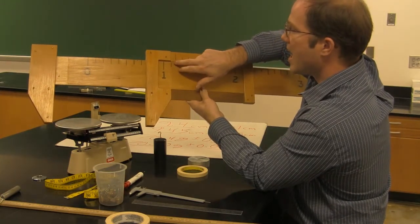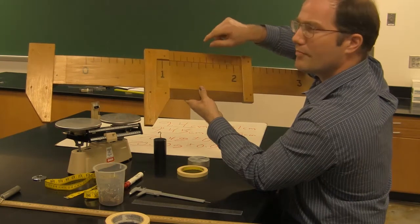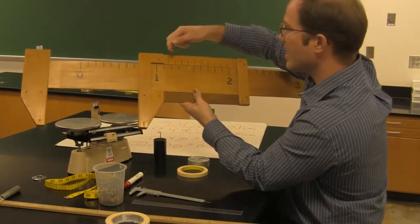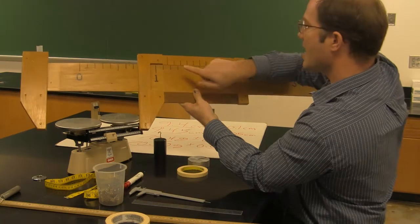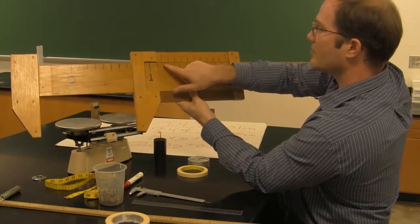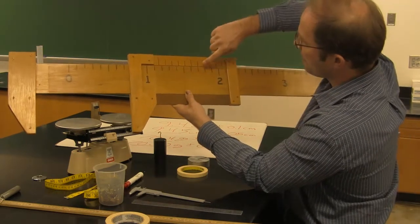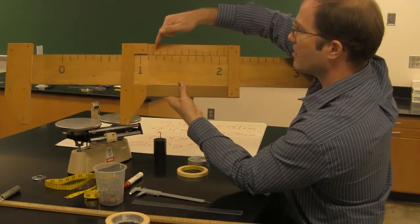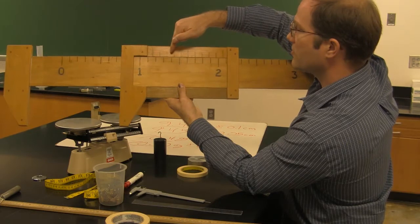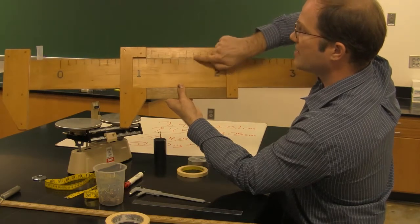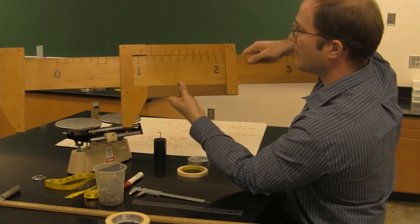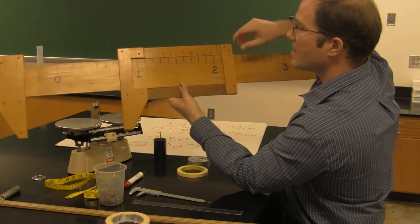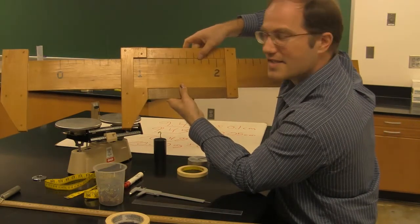I get my last digit. This is 1.1 something. The way I get my last digit is I follow along the calipers, and I find where one of these top lines lines up well with the bottom line. Looks like that one lines up the best. Let's count over: zero, one, two, three, four, five, six. The sixth line lines up well with a line beneath it. That's my last decimal of precision.